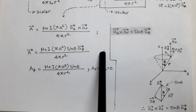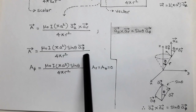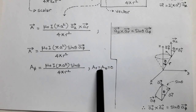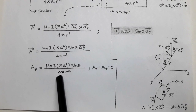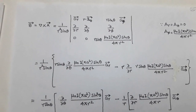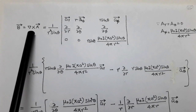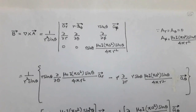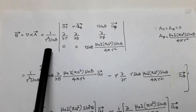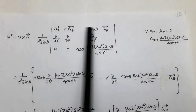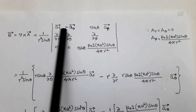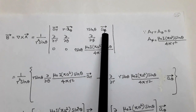The magnetic vector potential has only a φ-component: Aφ = μ₀Iπa² sinθ / (4πr²), while the r and θ components are zero. To find B⃗ = curl A⃗, we apply the curl formula in spherical coordinates: (1 / r² sinθ) times the determinant with first row [r̂, r θ̂, r sinθ φ̂].